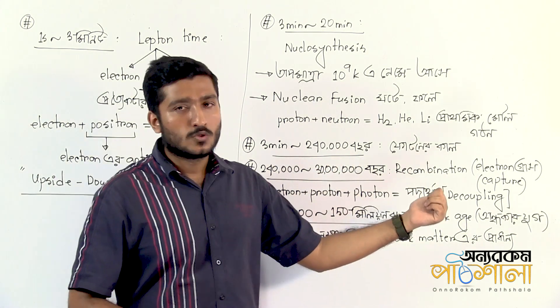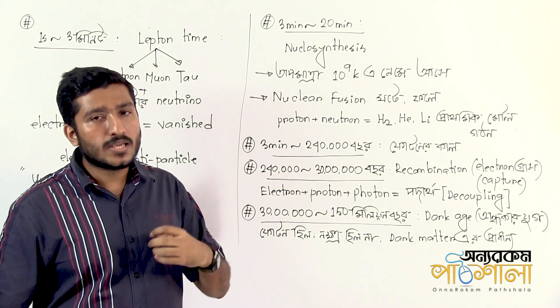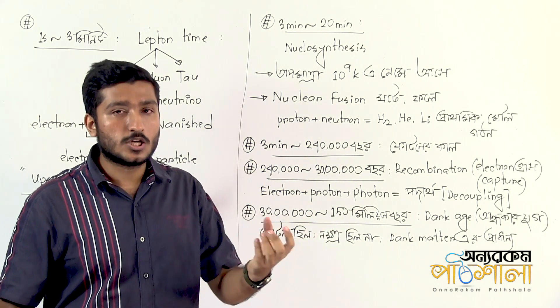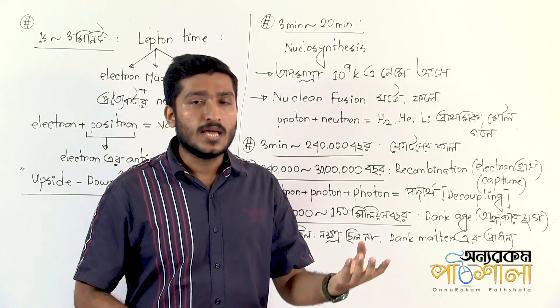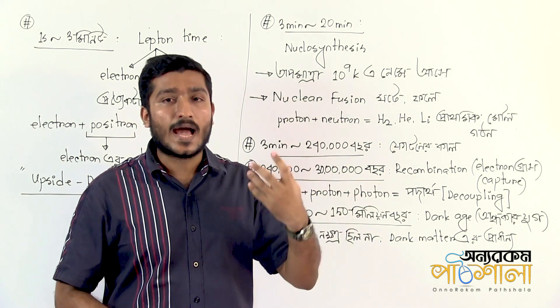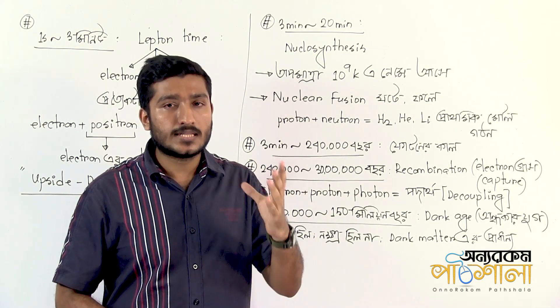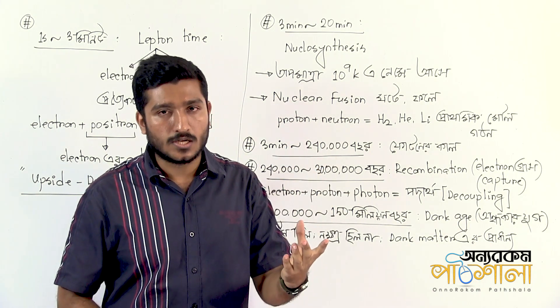This era leads to recombination, occurring around 380,000 years after the Big Bang. Despite the name, recombination actually refers to the first time electrons combined with nuclei to form neutral atoms - primarily hydrogen and helium. Before this, electrons and nuclei existed separately in an ionized plasma state.